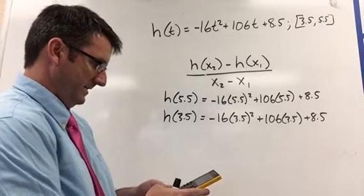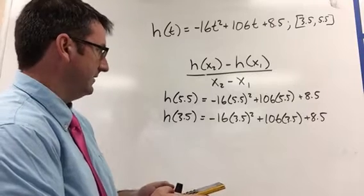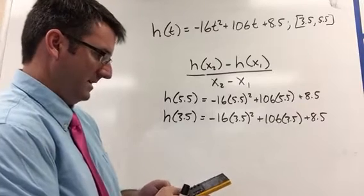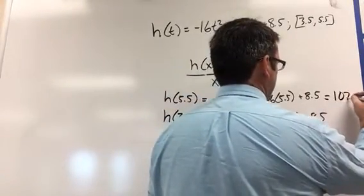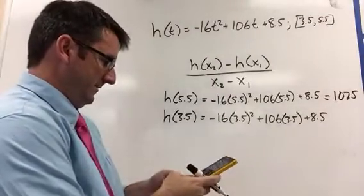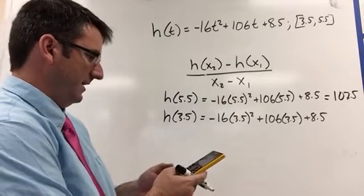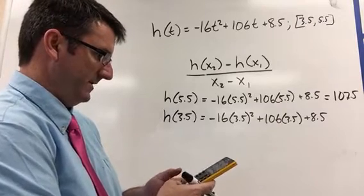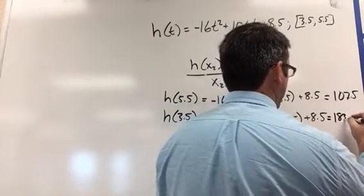So we've got negative 16 times 5.5 squared plus 106 times 5.5 plus 8.5. This is negative 16 times 3.5 squared plus 106 times 3.5 plus 8.5. This is 183.5.